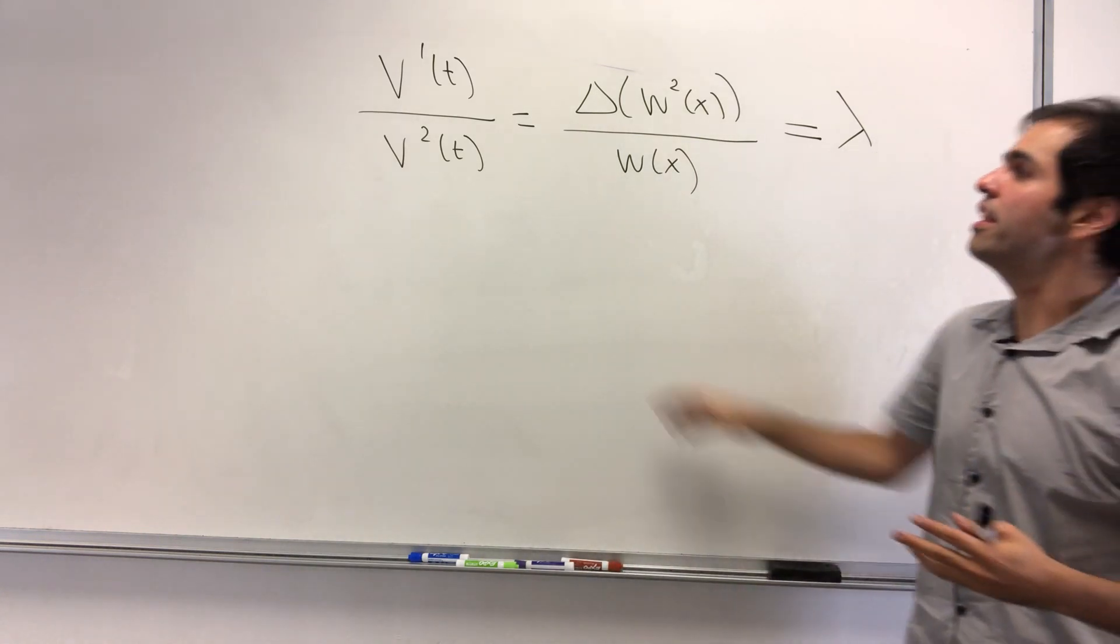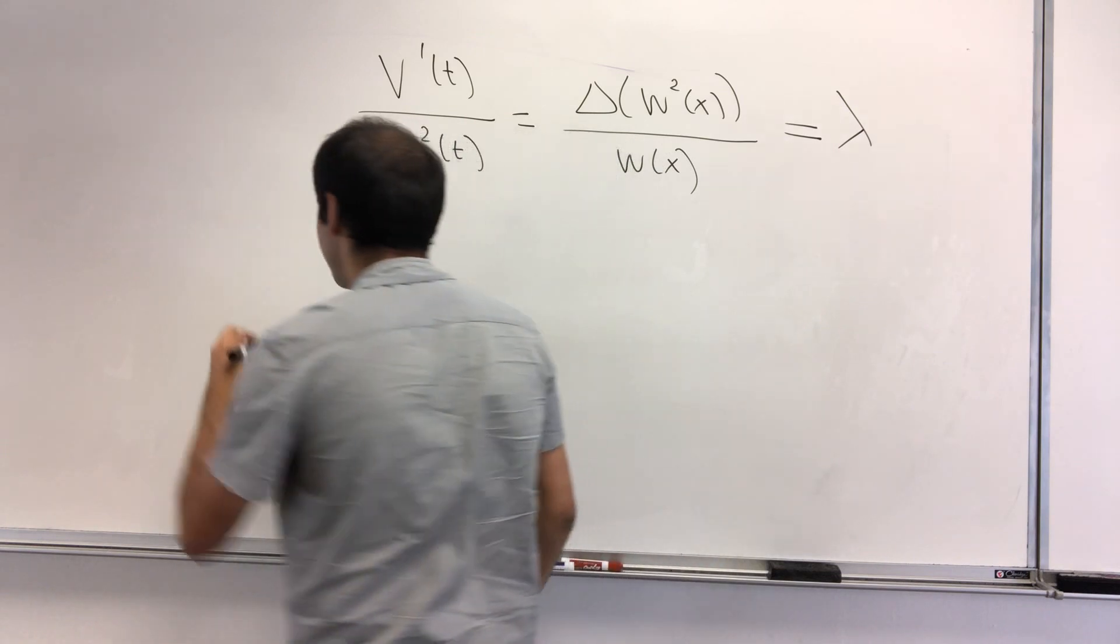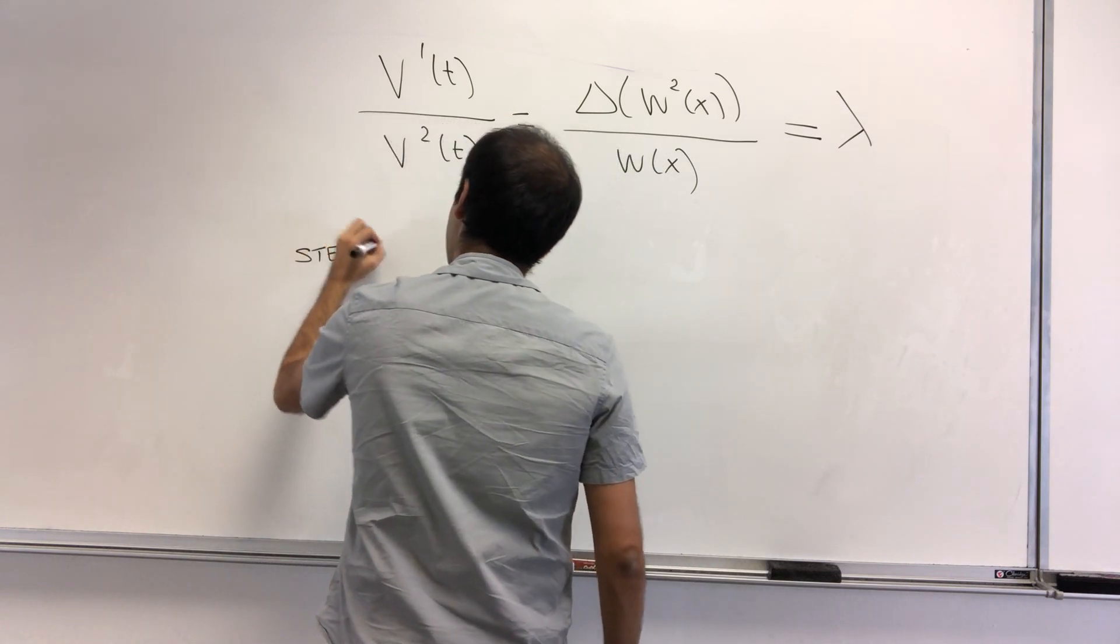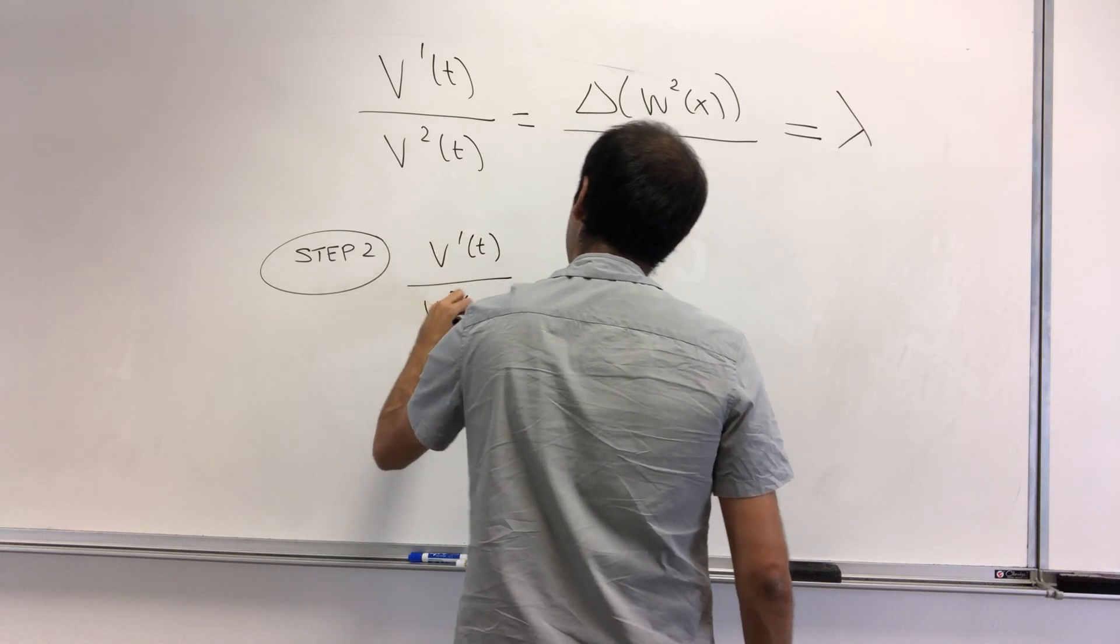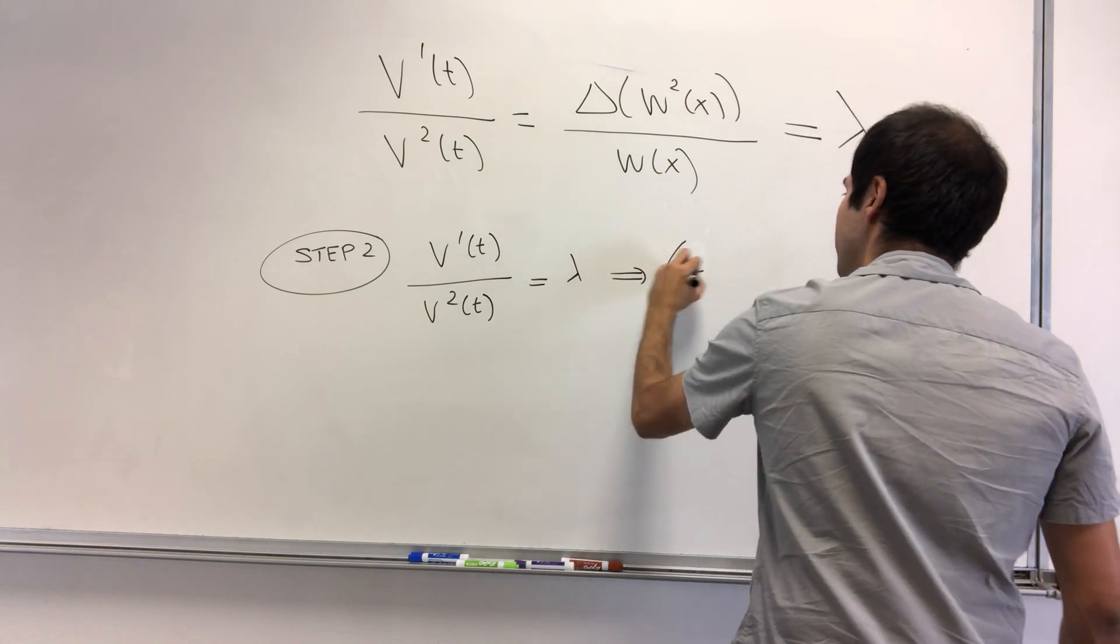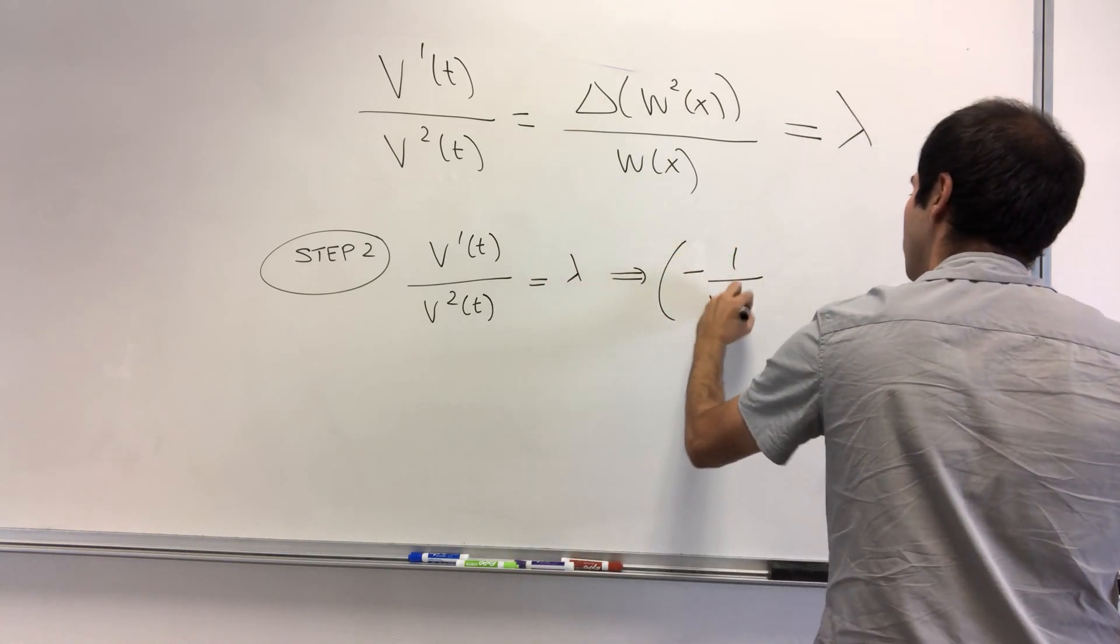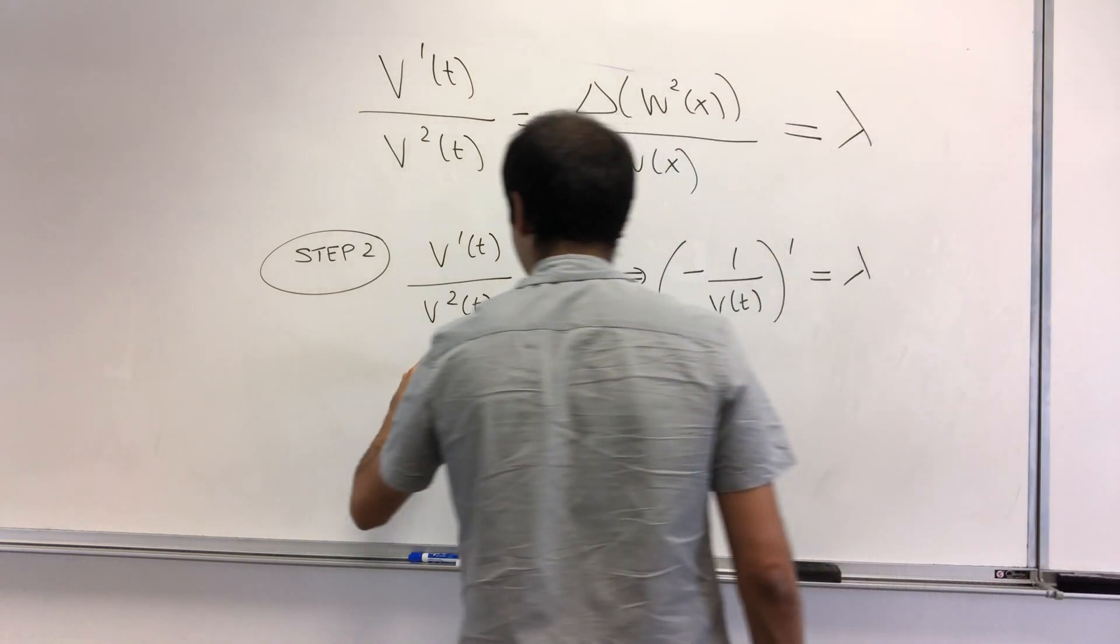Okay, and the good thing is, with this we can already solve for v, because the equation is easy enough. So step two, v prime of t over v squared of t equals lambda, but this is just the derivative of minus one over v of t, that equals lambda.